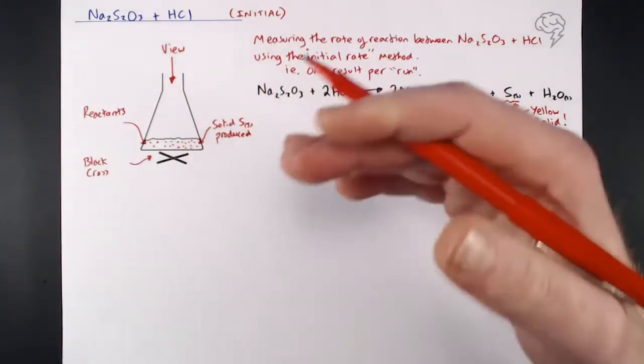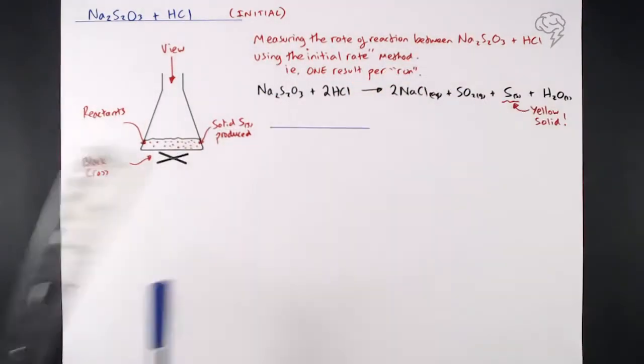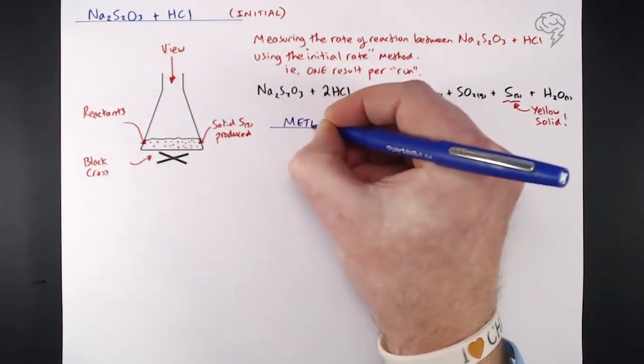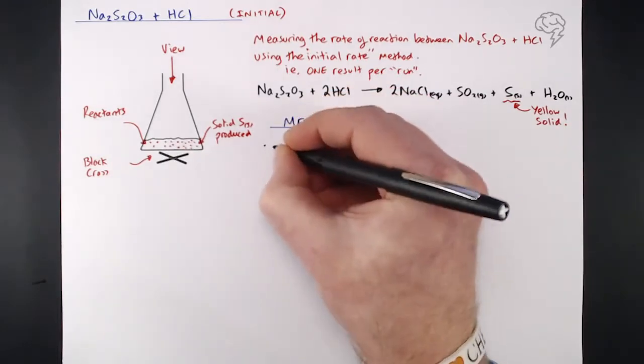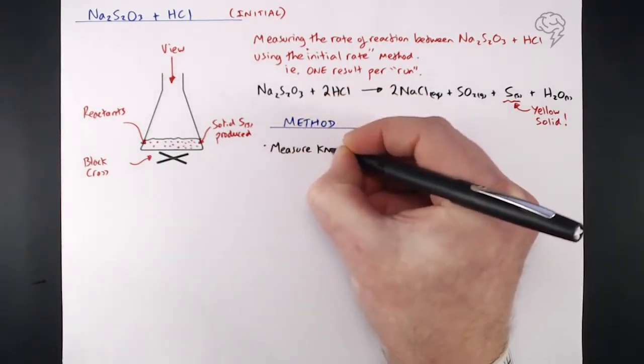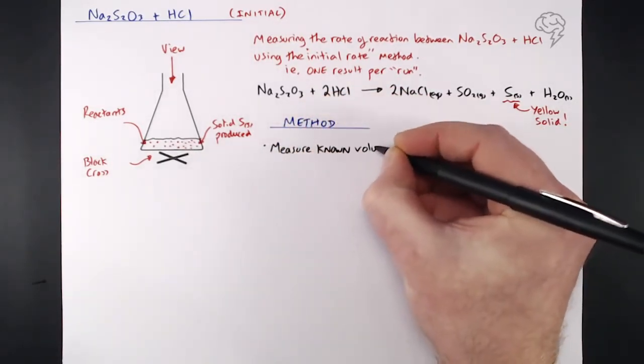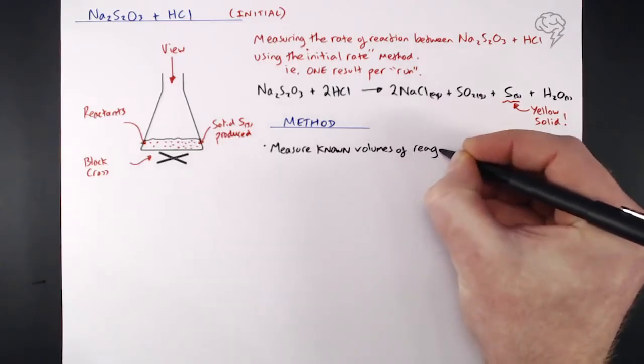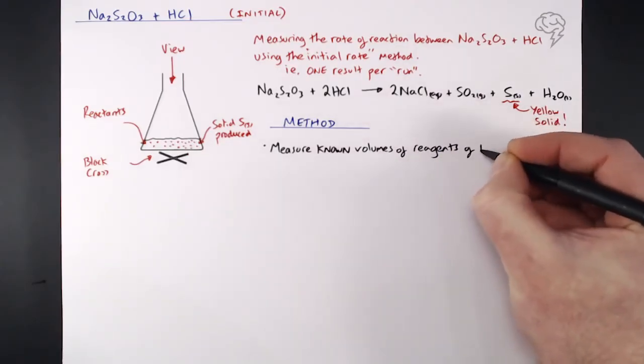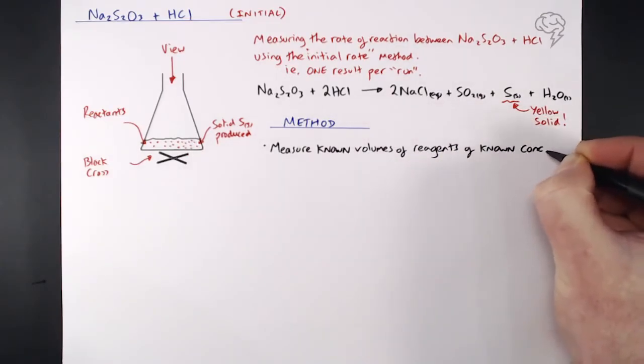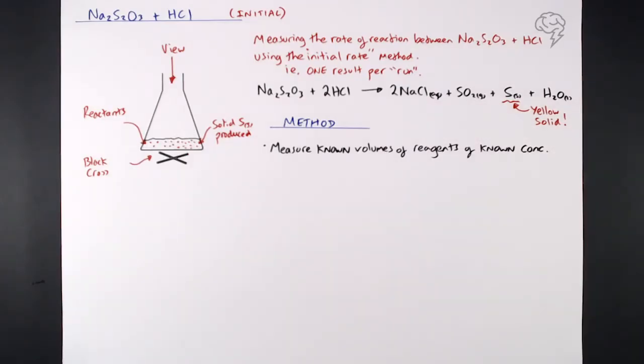So let's make a note of the actual method here. First up, really importantly with our method, we need to measure known volumes of reagents of known concentration, because that's usually what we change here. Either the concentration of the sodium thiosulfate, the concentration of hydrochloric acid, the volumes have to remain the same though. So we measure known volume of reagents of known concentration.